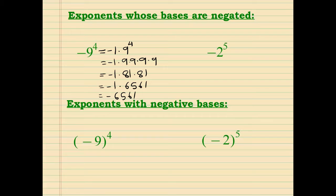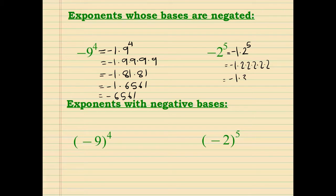On the next example, we have negative 2 to the 5th power. The negative 1 is separate, so we have negative 1 times 2 times 2 times 2 times 2 times 2. That equals negative 1 times 32, so the answer is negative 32.